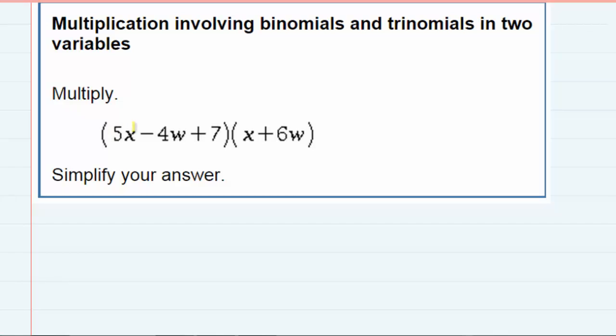Starting with the 5x in the first term, I can distribute that 5x to each of the terms in the second expression. So we would have 5x times x, which gives us 5x squared, and then 5x times 6w. That gives us 30xw, since 5 times 6 is 30 and x times w is xw.